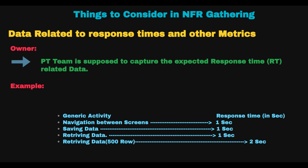The last point is data related to response time and other metrics. The performance testing team is supposed to capture the expected response time. For example, navigate between screens might be one second, saving data might be one second, retrieving data might be one second, but retrieving 500 rows might be two seconds, and retrieving thousands of rows might be three seconds. These values need to be determined by discussing with the business and documented as part of response time data.